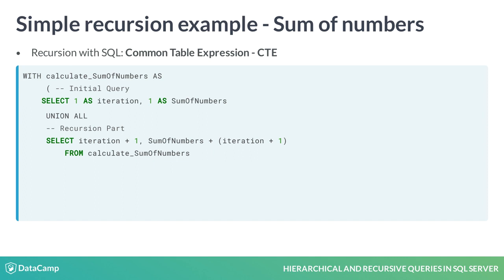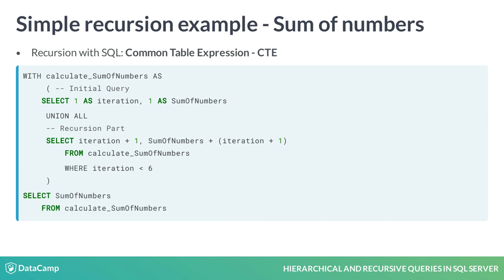You can see that the termination condition is set to 6, which means this query calculates the sum of numbers until 6. Finally, the CTE is selected to get the wanted result.